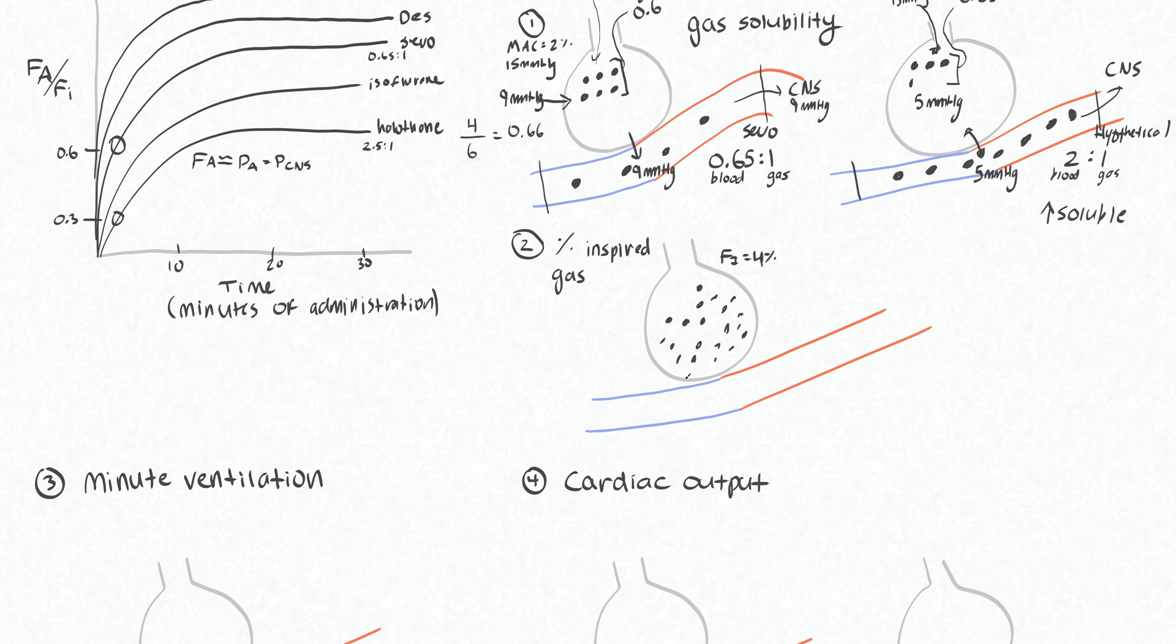Henry's law would dictate that this will force double the amount of particles into the blood. So instead of 4, we'll move 8 of these over. 1, 2, 3, 4, 5, 6, 7, 8. Then our end tidal gas here will be 2.4%. So by doubling our fraction of inspired gas, we have much more easily saturated this column of blood with our inhalational agent.